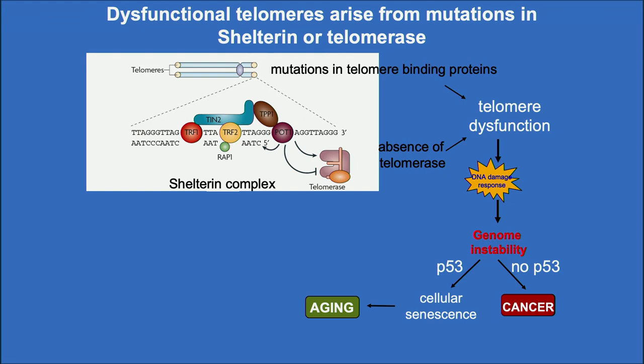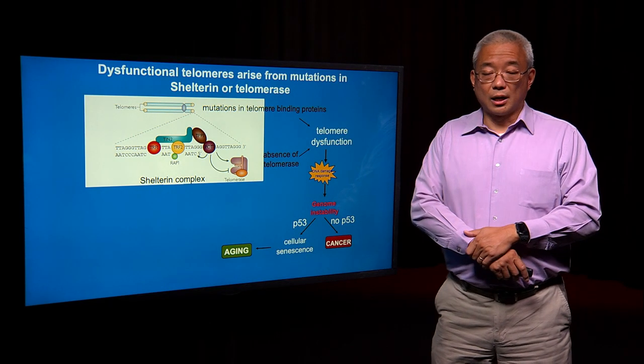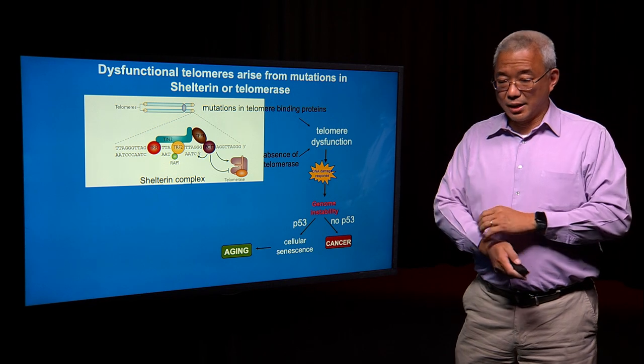In the absence of telomerase, or mutations in shelterin complex genes, give rise to telomeres that we call dysfunctional — they are no longer protective. They elicit a DNA damage response which is read by a protein called p53. You may have heard of this protein — this is the guardian of the genome. In the setting of an intact p53, telomere dysfunction triggers cellular senescence, leading to the onset of an aging phenotype. However, in the absence of p53, cellular senescence is not elicited; in fact, genome instability then triggers the onset of cancer. Again, this intimate relationship between aging and cancer.